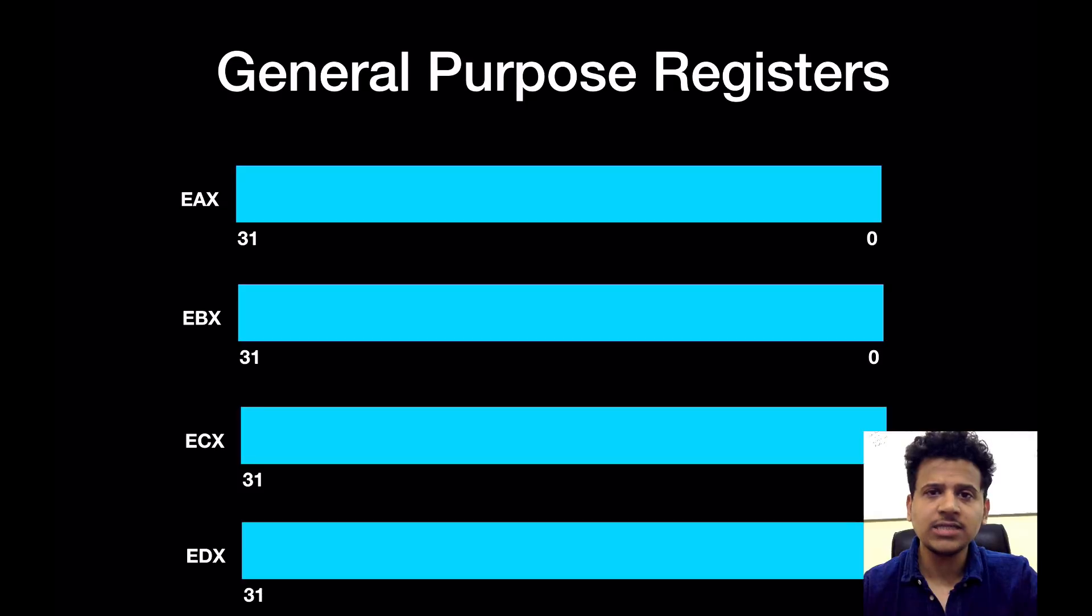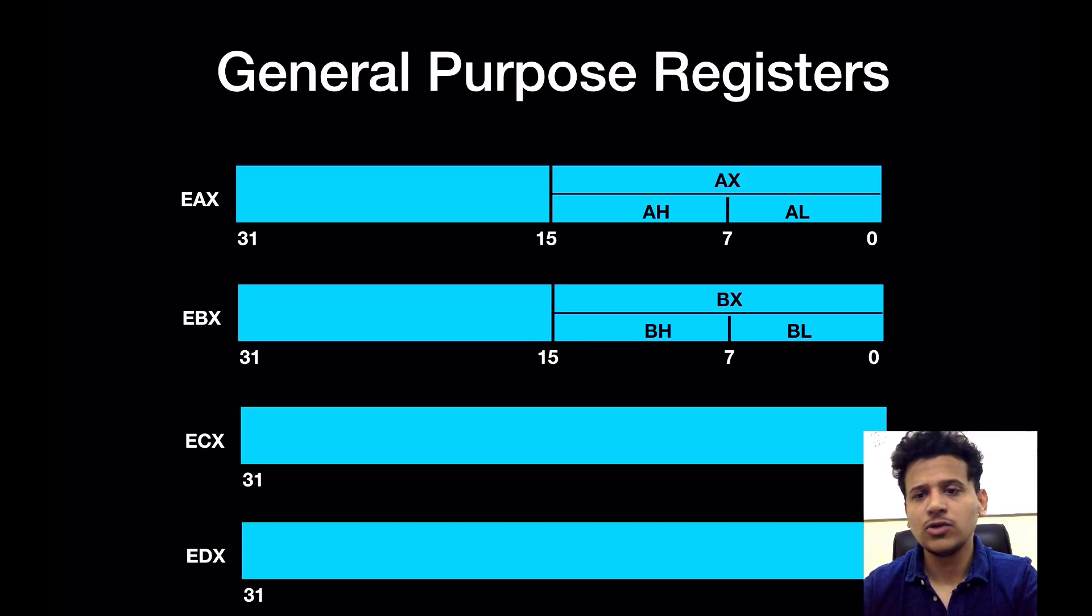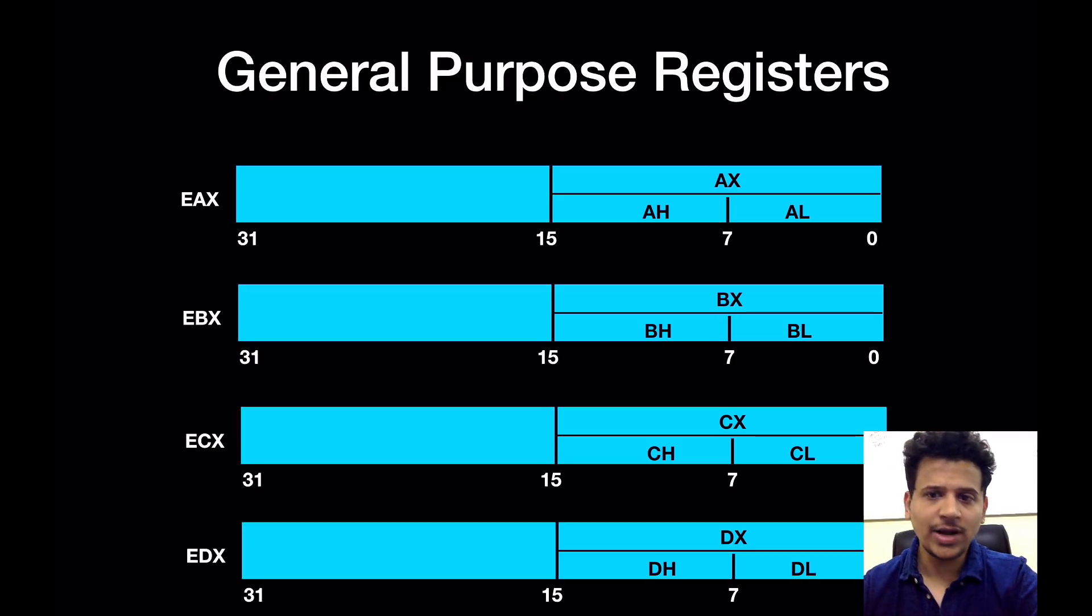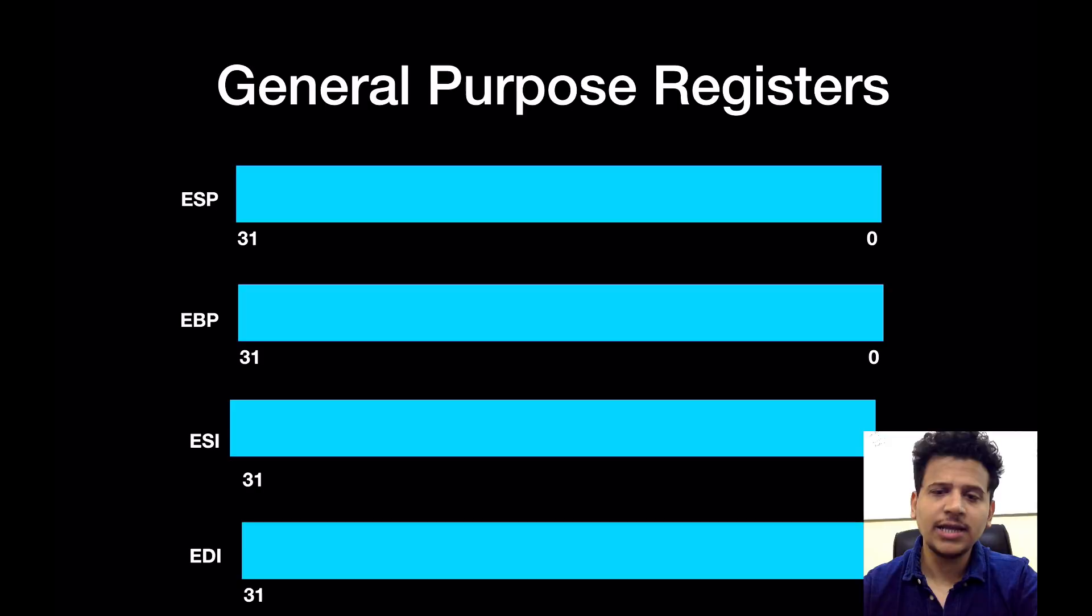Now, as I said earlier, in 32-bit systems all general purpose registers are 32-bit. So EAX is 32-bit, EBX is 32-bit, ECX is 32-bit, EDX is 32-bit. So we will access the lower word of EAX using AX. As well as we can access the lower byte of AX using AL, or we can access the higher byte of AX using AH. Similarly, we can access the lower word of EBX using BX, as well as lower byte of BX using BL, and the higher byte of BX using BH. The case is similar for ECX and EDX.